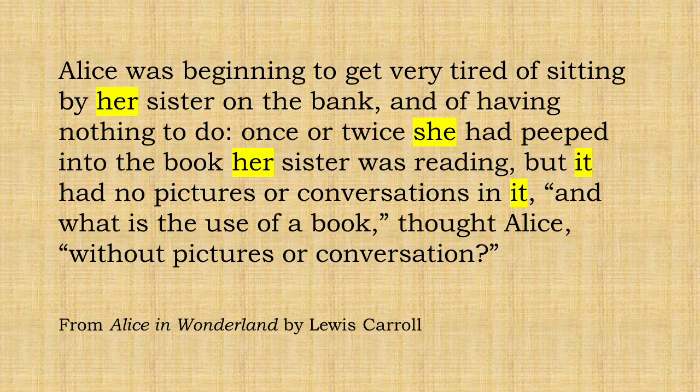Not only does that sound very awkward and strange, it's also more difficult to understand. So we add the pronouns: instead of 'Alice's sister' we say 'her sister'; instead of repeating 'Alice' every time, Lewis Carroll uses her name at the beginning and end to avoid confusion — otherwise you wouldn't know whether he was talking about Alice or her sister. When it's clear he's talking about Alice, he replaces the word with 'she'. Similarly, when it's clear he means the book, he replaces it with 'it'.